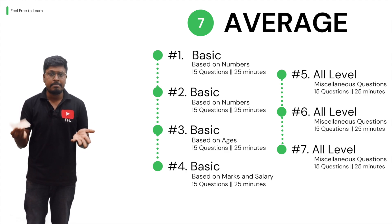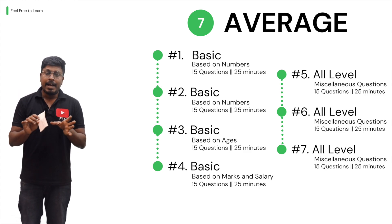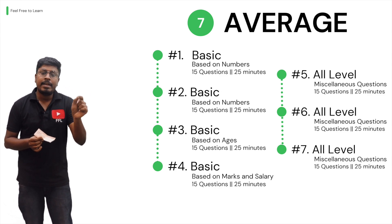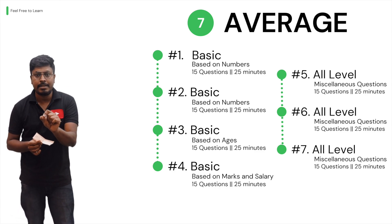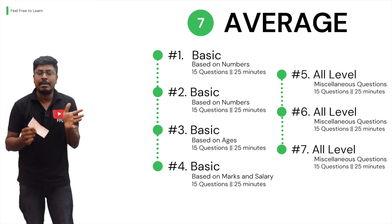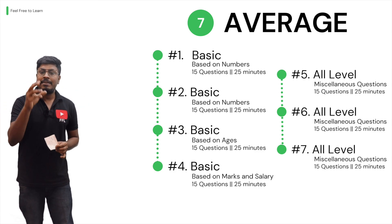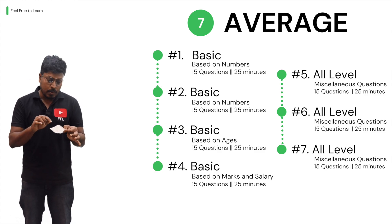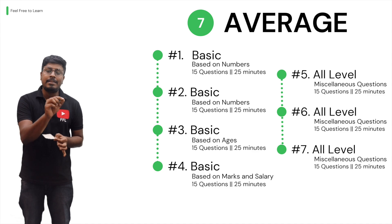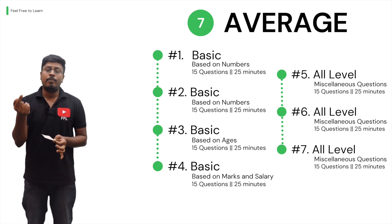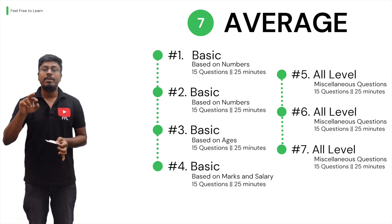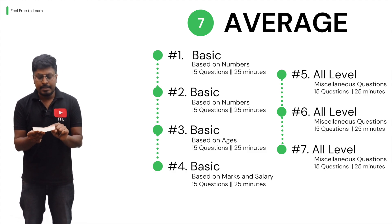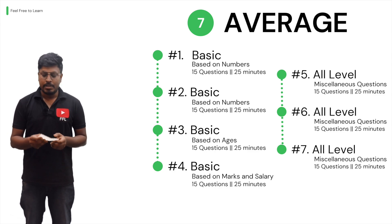Test four is based on marks and salary. For example: there are 60 boys in a classroom, the average marks in physics is 23; there are 70 girls and their average physics marks is 76 — what is the total score? For salary questions: 23 employees have an average salary of 2300 — if a new employee joins, what will the new person's salary be? These kinds of questions appear in test four.